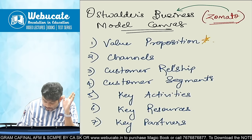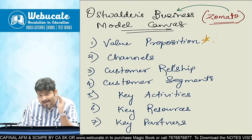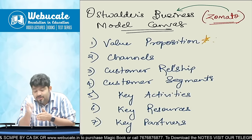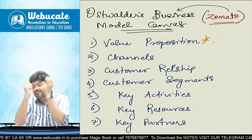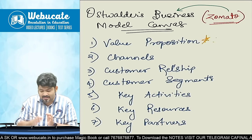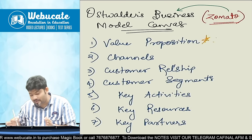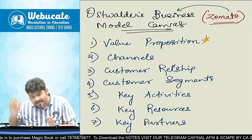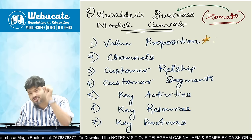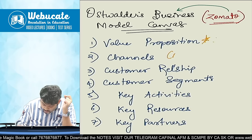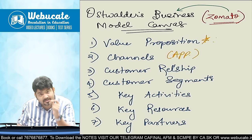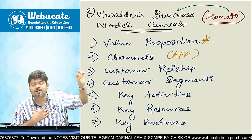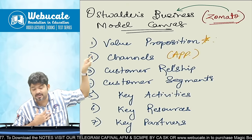Toh pehle value proposition pe tick maara gaya. Phir aaya channels — channel matlab zariya, way to reach the customer. I have a very good business idea, but till the time the business idea is not known by the customer, customer will not order on Zomato. So that is where you have to create a channel. Unhone Zomato ka jo ek app banaya, that is one of the ways through which I can communicate with Zomato — so that is a channel.